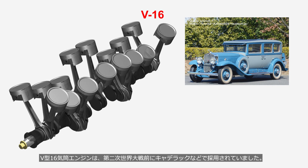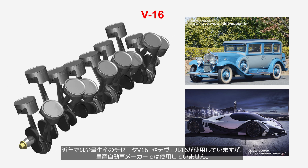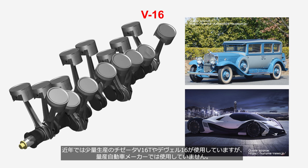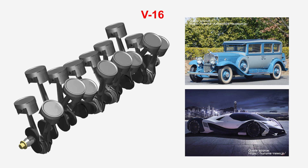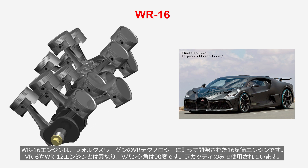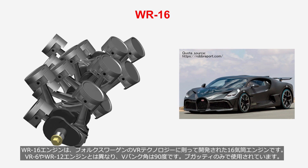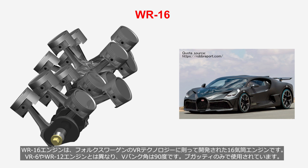V-16 engines were used before World War II in vehicles such as Cadillacs. In recent years, they have been employed by low-volume production cars like the Cizeta V16T and Devel Sixteen, but large-scale car manufacturers do not use them for mass-produced models. The WR-16 engine is developed based on Volkswagen's VR technology, with a V-bank angle of 90 degrees, and is exclusively used by Bugatti.